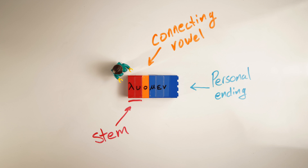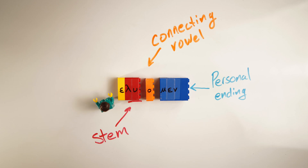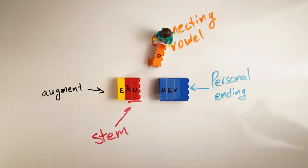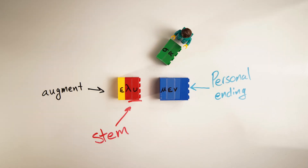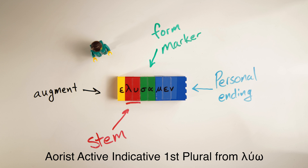If we wanted to see the aorist active indicative, we would need to add and change some bricks. We still have the same stem, but we need to add an epsilon — the augment — to the front of the verb. Then we need to remove that connecting vowel, those orange bricks, and add the sigma-alpha form marker. You can think of the alpha as like a connecting vowel — it isn't, but it's like it. In reality, it is a part of the form marker, the sigma-alpha. Then finally, we need our secondary active personal endings. For this form the ending is actually the same, but they differ for some other forms. Our aorist active indicative would be elusamen.